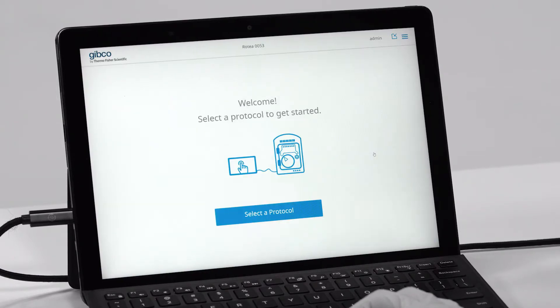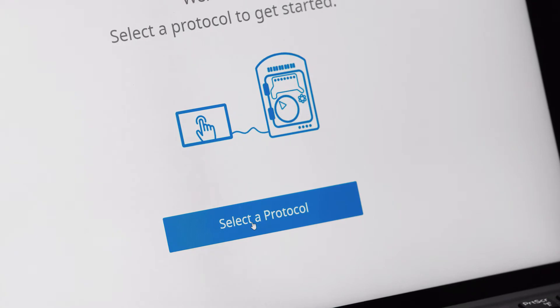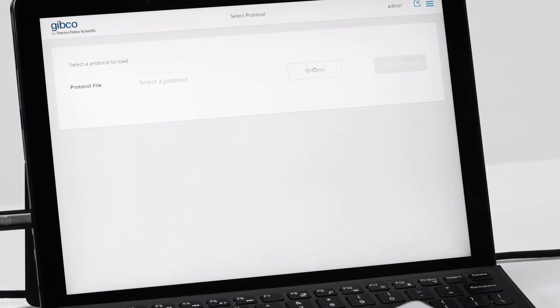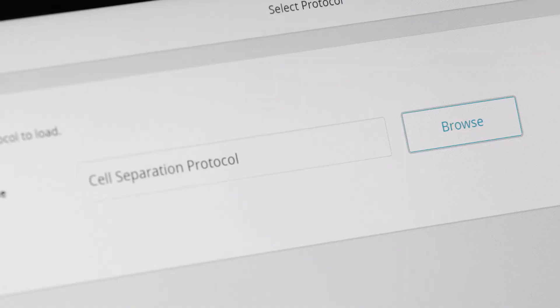Second, navigate to a preset protocol, click select a protocol, and then browse to find your protocol. Here, that'll be cell separation.